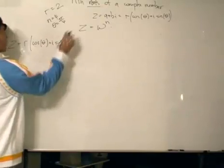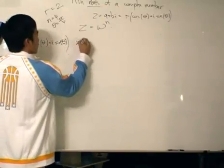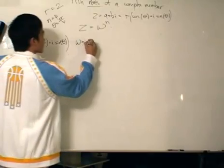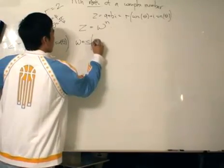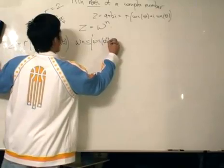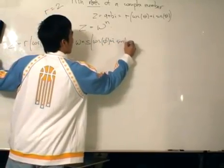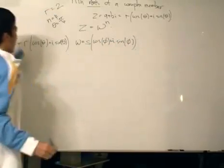That's fine. Okay, and then we let w equal to s cosine phi plus i sine phi.